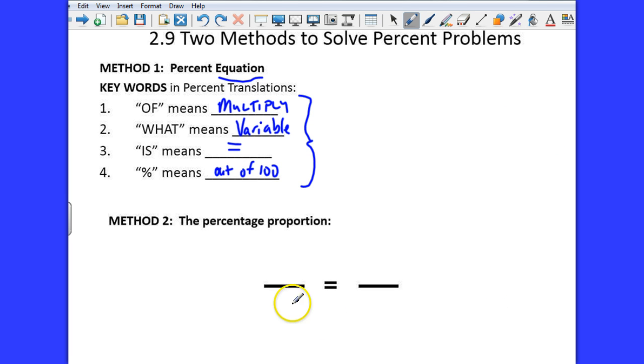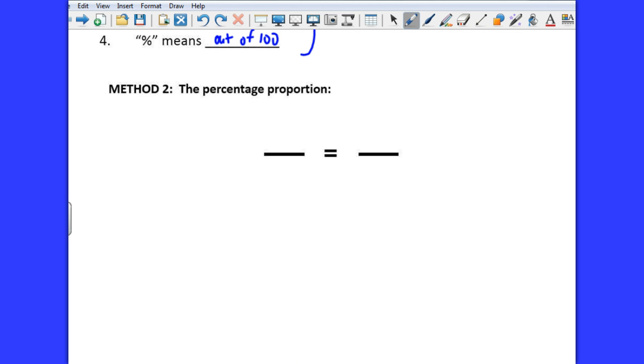The second method is using a percent proportion. And a percent proportion, this on your paper, I put, this is actually like a ratio we're going to fill in here. The numerator on this part is called the part, and the denominator is the whole. Now, the part is usually signaled by the word 'is', not always, but often 'is' represents the part, and the whole is the word 'of'. You'll notice the similar words from the ones we just talked about.